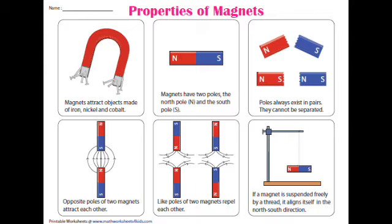Magnets have two poles: the north pole and the south pole. Magnets always exist as bipoles — every magnet must have two poles. There is no singular pole or uni-pole. Poles always exist in pairs and cannot be separated.